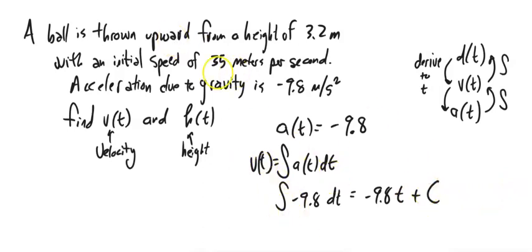Well, I have some information up here. I know the initial speed. In other words, the velocity at time 0 is 35. In other words, when t is 0, this thing has to equal 35.